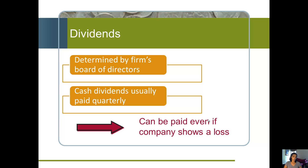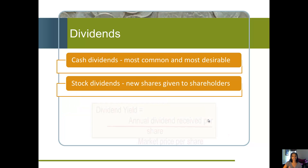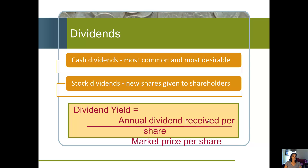Dividends are determined by the board of directors and are usually paid quarterly. In this country, a firm can even pay dividends if they show a loss — in other countries that's not the case. Because some shareholders are almost dependent on those dividends, firms try hard not to stop paying them so as not to disappoint shareholders. They're allowed to pay dividends even while losing money, though not indefinitely — if they think it's short term, they might go ahead. Most companies pay cash dividends, but they could also pay a stock dividend, giving you more shares as a way to share profits.